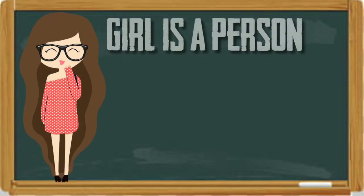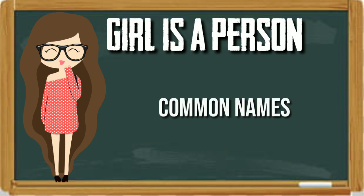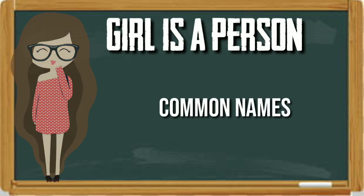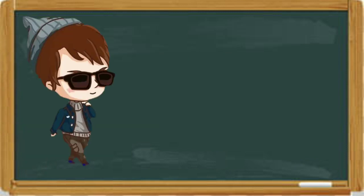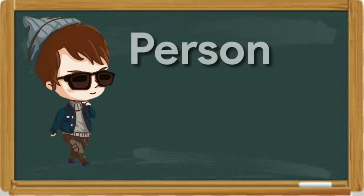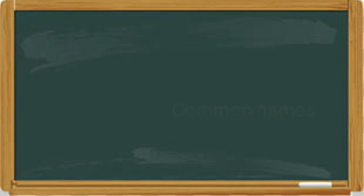Let's see the following common names. Girl — girl is a person. This is a common name, as a girl can be anyone without being a specific name. You can say boy — boy is also a person. This is a common name, as a boy can be anyone without being a specific name.